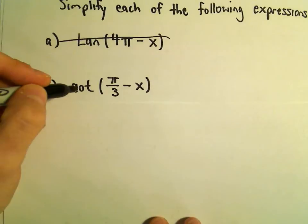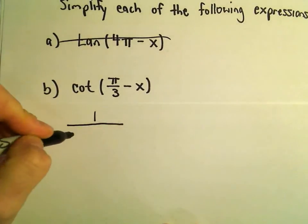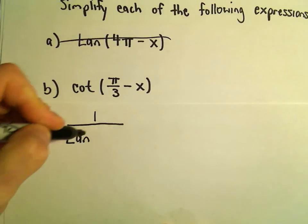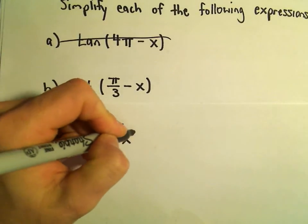What I'm going to do is rewrite cotangent as 1 over tangent. So we would have tangent of π/3 minus x.